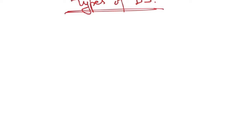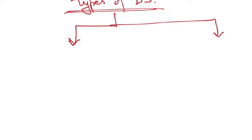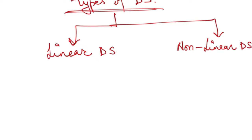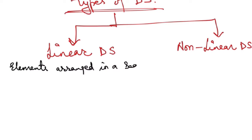Now let's talk about the types of data structures. There are two broad categories: the first is linear data structures and the second is non-linear data structures. In linear data structures, the elements are arranged in a sequence, one after the other.